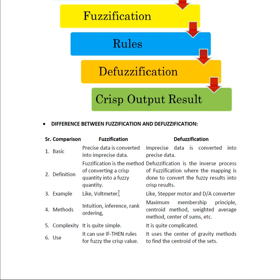De-fuzzification results are given to devices like stepper motors or DA converters. Just as a sensor provides input for fuzzification, de-fuzzification results go to an actuator. The methods related to fuzzification include intuition, inference, rank ordering, and similar factors.